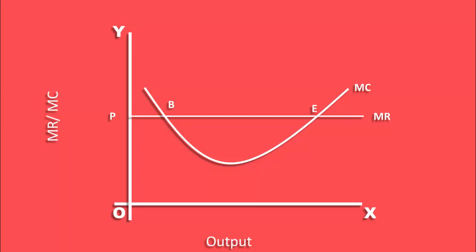Of the two points, at which point will the producer be in equilibrium? To find it out, we have to apply the second-order condition. At B, marginal cost is diminishing. At E, marginal cost is rising. Only point E satisfies the second-order condition.